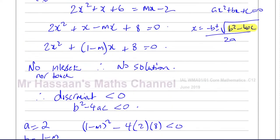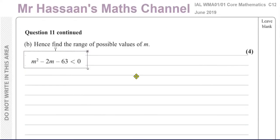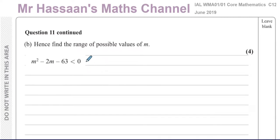That's part A done. Part B says: hence, find the range of possible values of M. Using what we just showed — this is the type of question where if you don't know how to do part A, what you need for part B is already shown for you. So you can skip part A if needed, but don't throw away these four marks if you can solve a quadratic inequality.